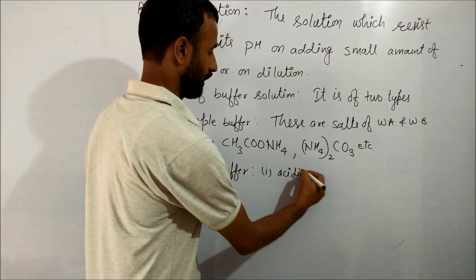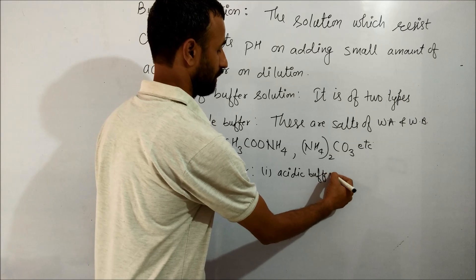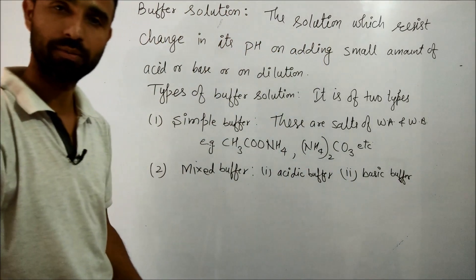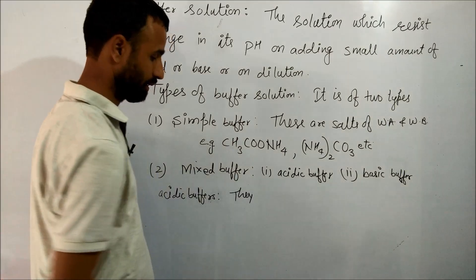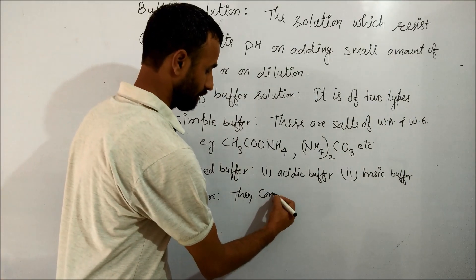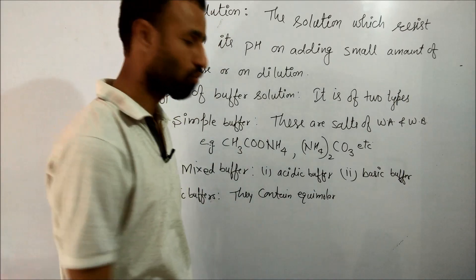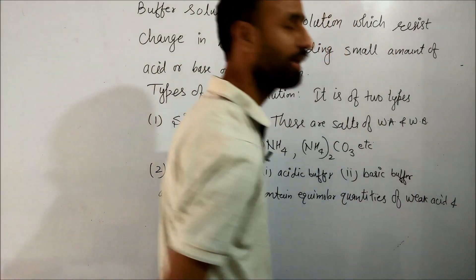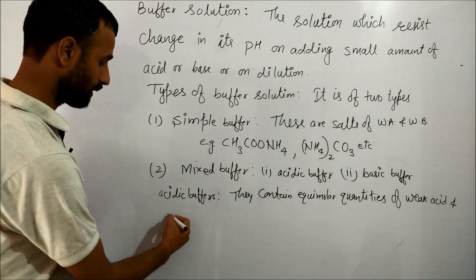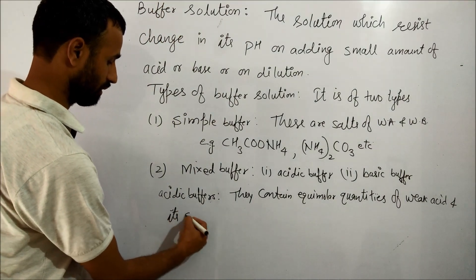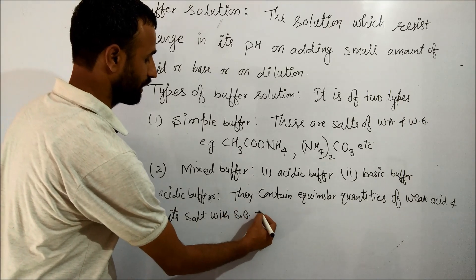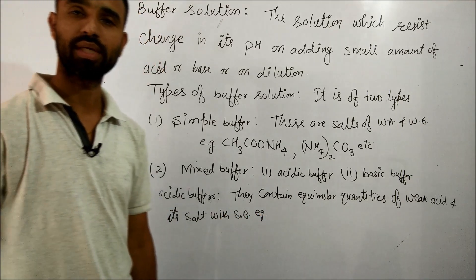Acidic Buffers contain equimolar quantities of weak acid and its salt with strong base. For example,